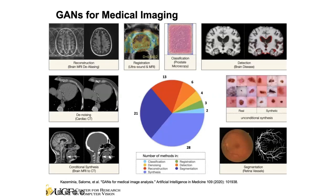In medical image computing there are also many GAN applications. A survey paper covers many tasks: classification, denoising, reconstruction, synthesis, registration, detection, and segmentation — basically most common tasks in medical image computing have been addressed using GANs. Some achieve very good results, especially in image processing tasks like denoising, image generation, and image reconstruction.